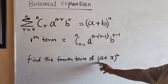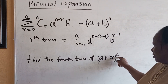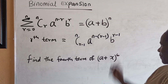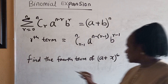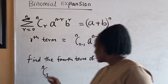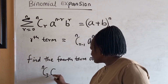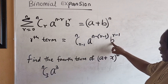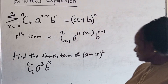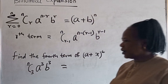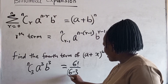For example, find the fourth term of (A plus X) raised to the power 6. Here N is 6 and we are looking for the fourth term, so R is 4. We have 6 combination (4 minus 1), that is 6 combination 3. So we have A raised to the power (6 minus 3) and B raised to the power (4 minus 1). What is 6 combination 3? Our N is 6, so we have 6 factorial over (6 minus 3) factorial times 3 factorial.